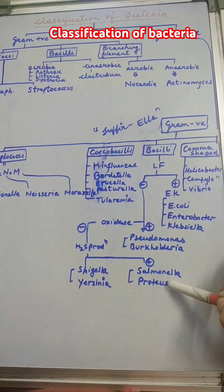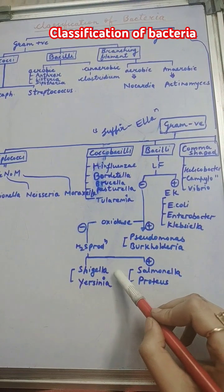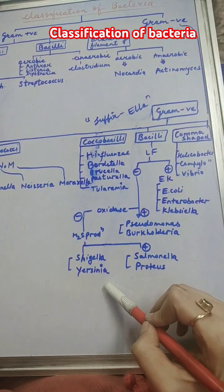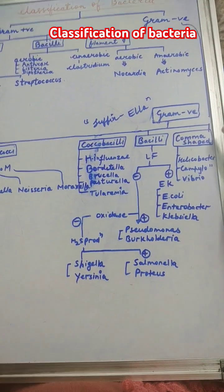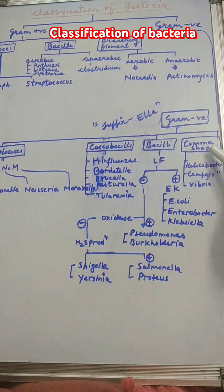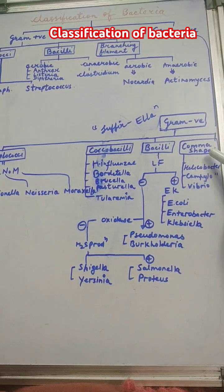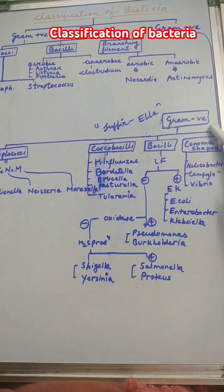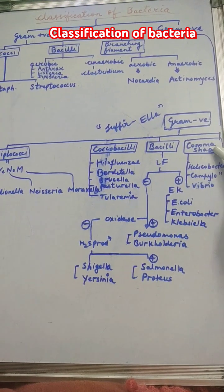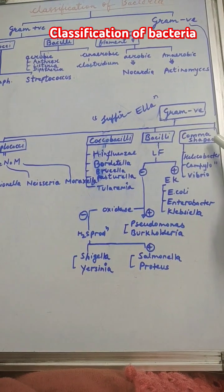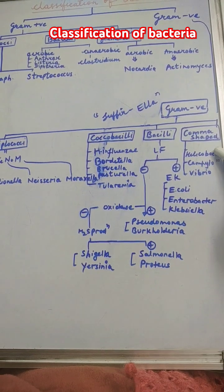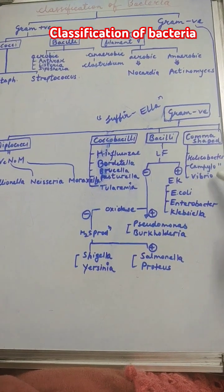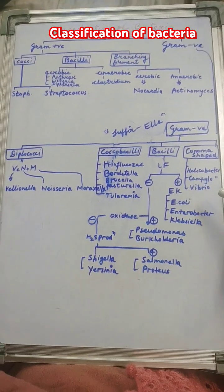Oxidase negative non-lactose fermenters are divided on the basis of H2S production. Salmonella and Proteus produce H2S, while Shigella and Yersinia do not produce H2S. The last category is comma-shaped gram negative bacilli, which includes Helicobacter, Campylobacter, and Vibrio.